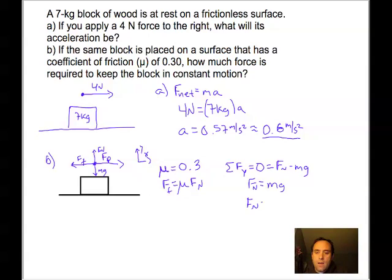F_N equals 68.6 newtons. Okay, so that's the normal force that the surface is pushing up on that block of wood with.